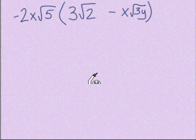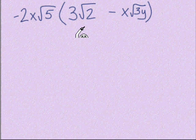It is time for you to try a problem. It's a little more involved than the one we just looked at, but it's the same idea — distributive property. Just remember to multiply the outsiders together and multiply the insiders together. Pause the video, work out the problem, and come back and we'll go through the answer together.